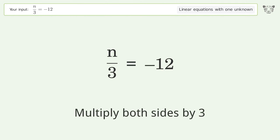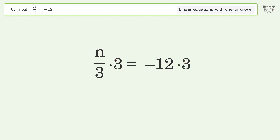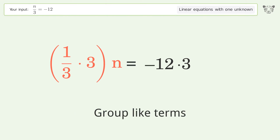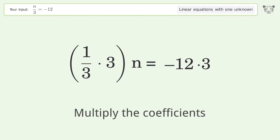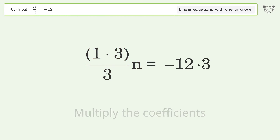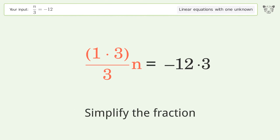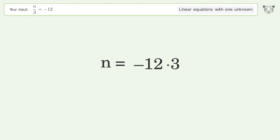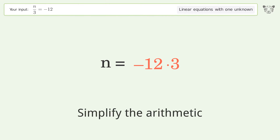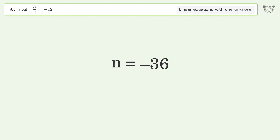Multiply both sides by three. Group like terms. Multiply the coefficients. Simplify the fraction. Simplify the arithmetic. And so the final result is n equals negative 36.